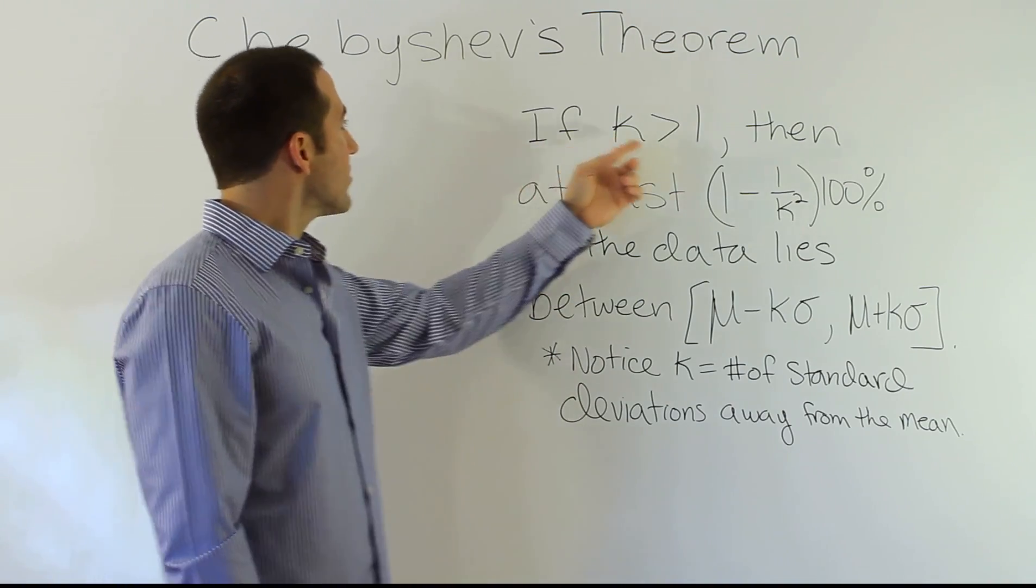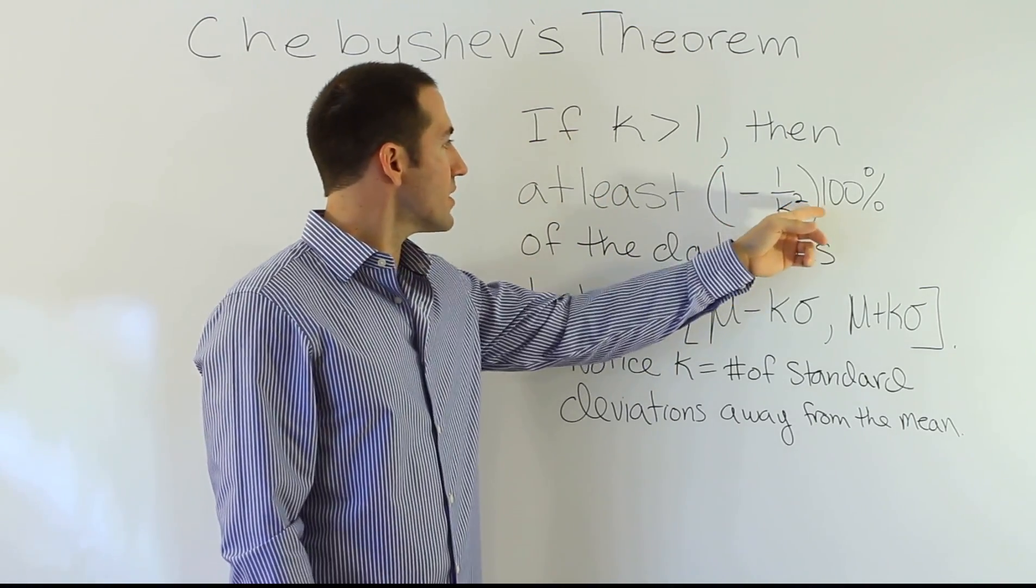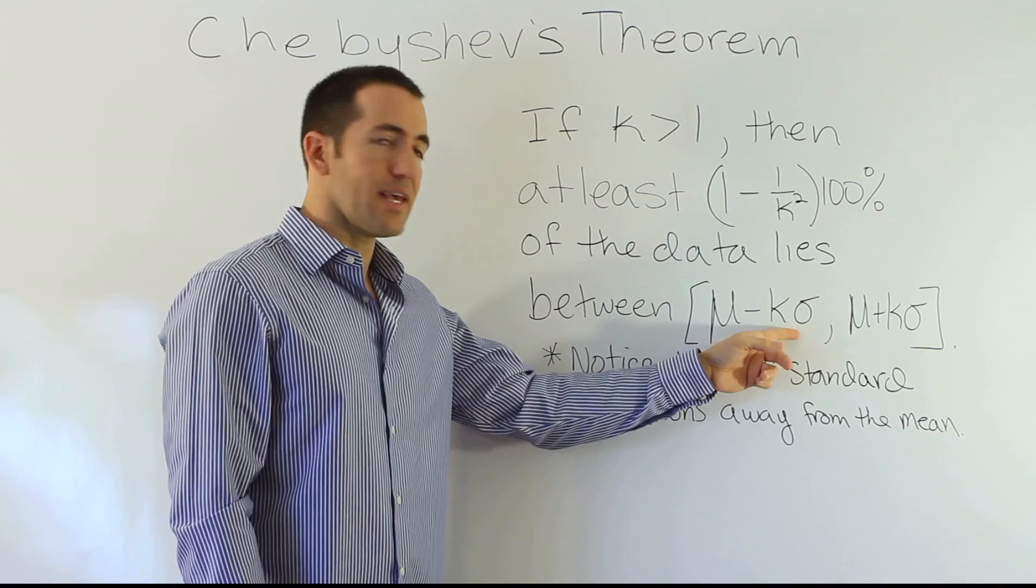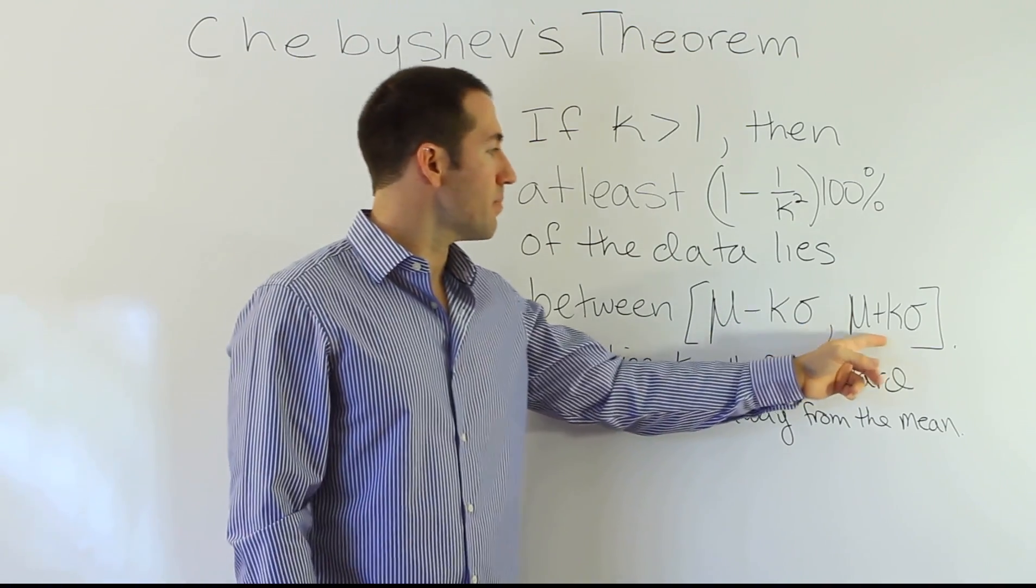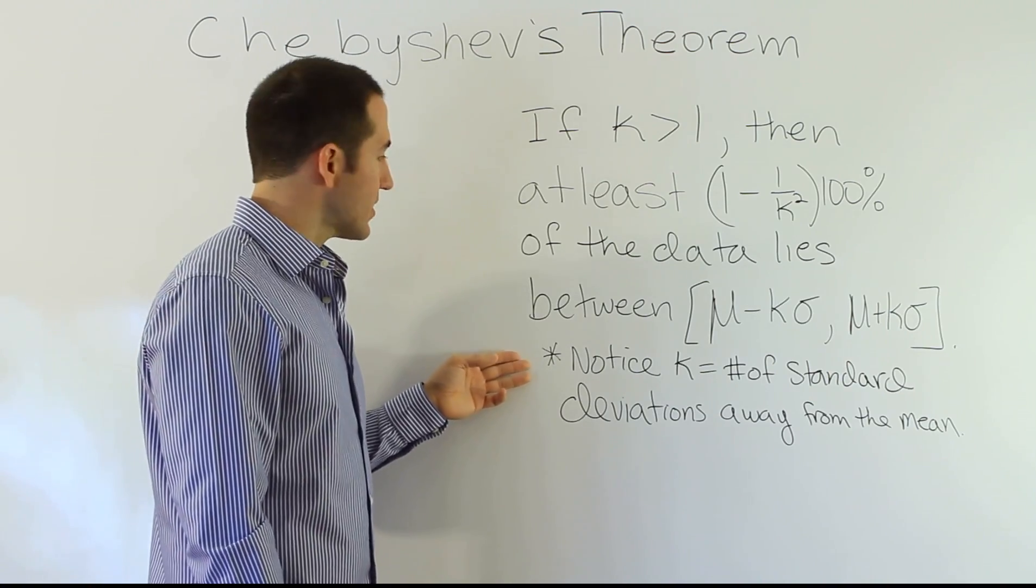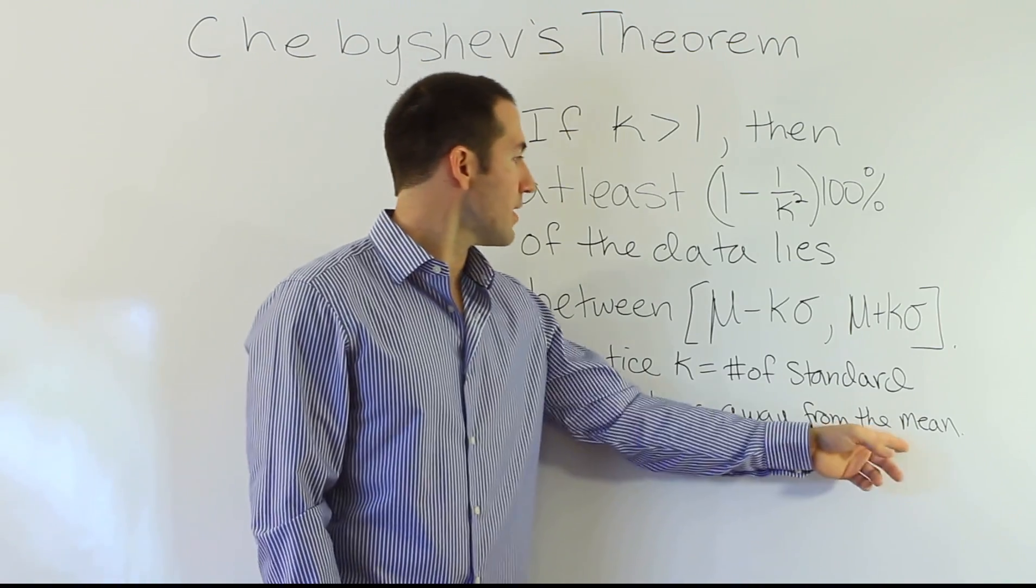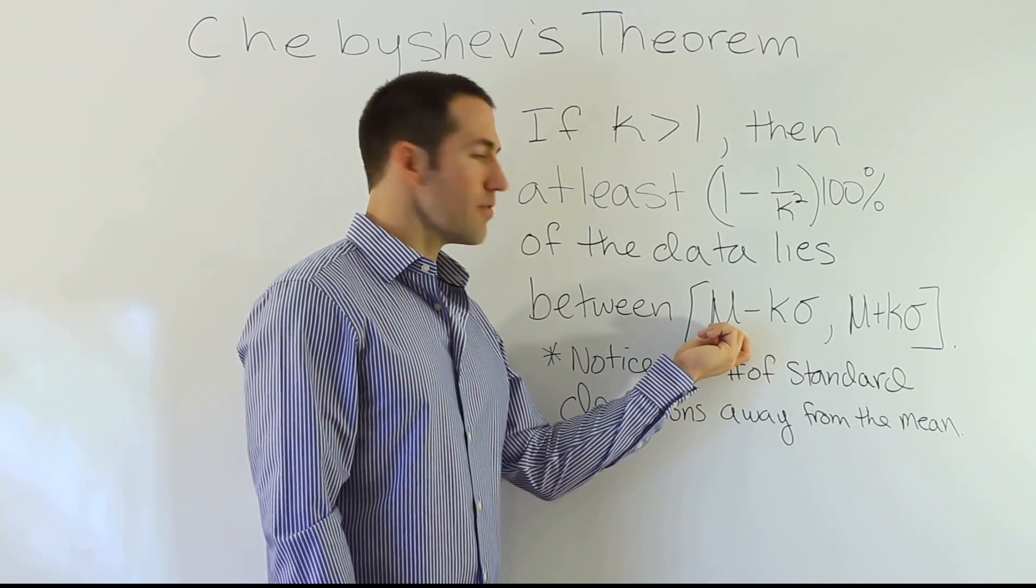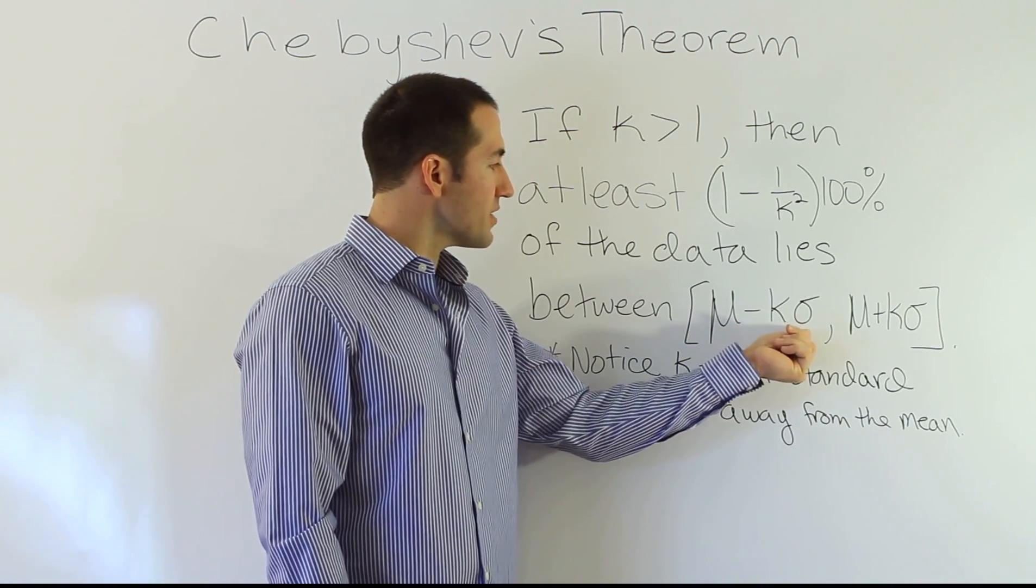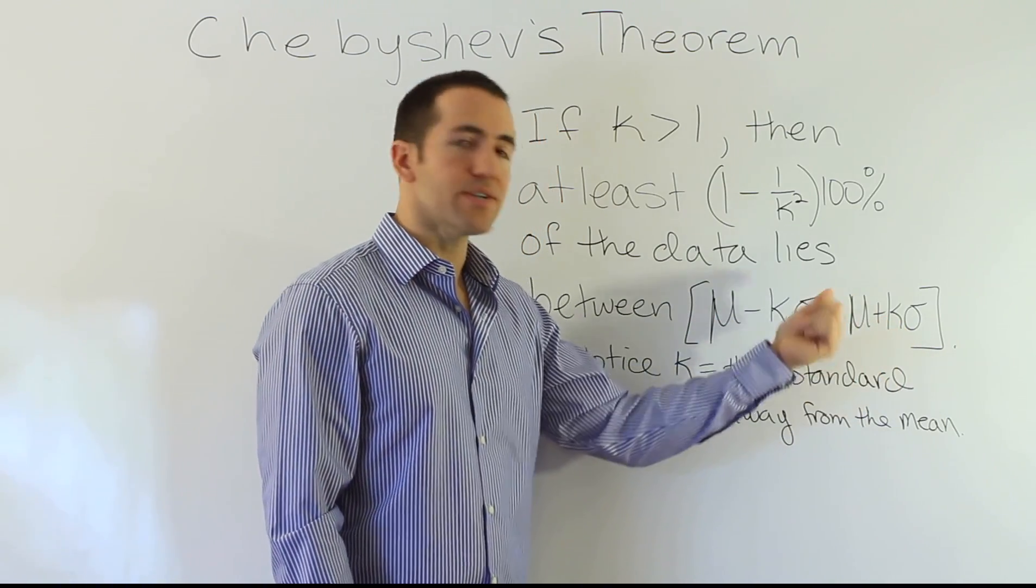So it says, if k is greater than 1, then at least 1 minus 1 over k squared times 100% of the data lies between the mean minus k standard deviations, the mean plus k standard deviations. And then I put a little note here. It says, notice that k is the number of standard deviations away from the mean. So the way they form this interval here is they start with the mean, and they subtract a number of standard deviations from the mean, and then they add a number of standard deviations to the mean.